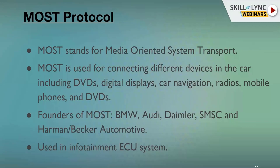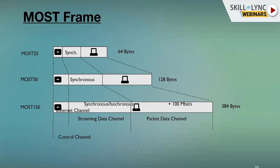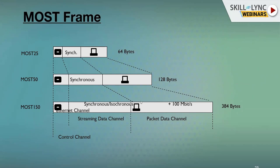There are different types of MOST frames: MOST25, MOST50, and MOST150, depending on their frame size and the streaming data channel they support — smaller and larger frames depending on the number of bytes.